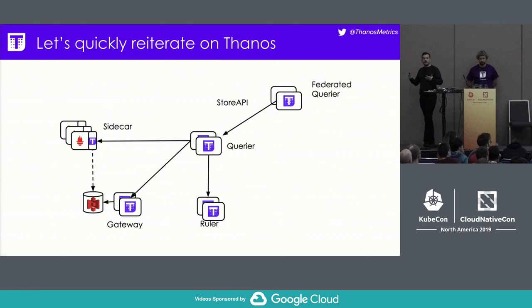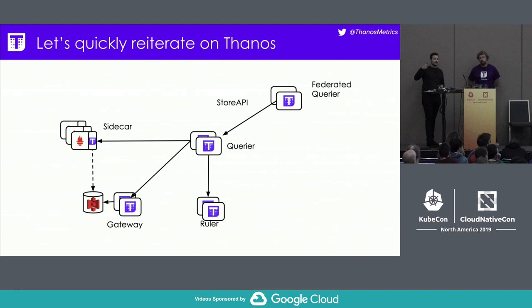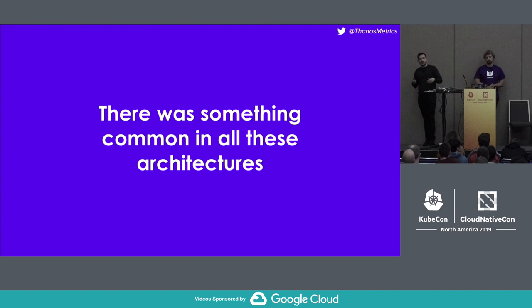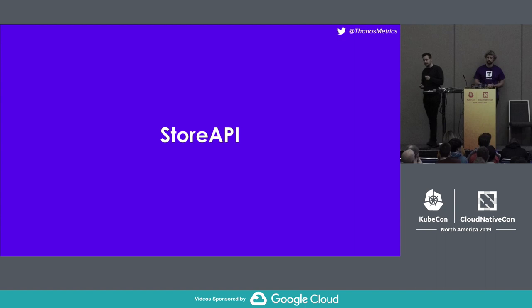Going even further, all of these components expose the Store API, and the querier also exposes this thing. This allows us to layer the system in a hierarchical manner and build truly global systems. As I was going through all of these architectures, what was common in all of them is one really crucial component — the Store API.